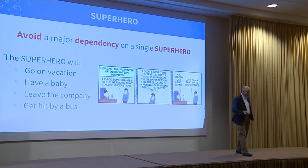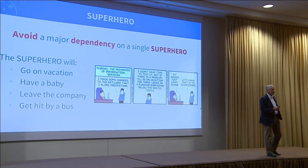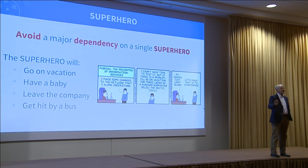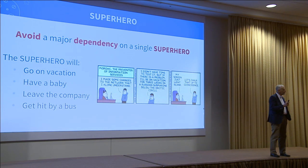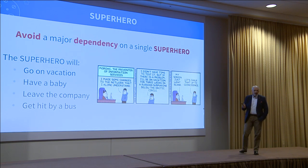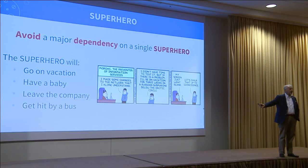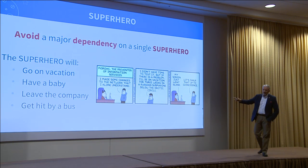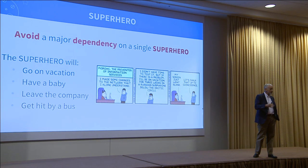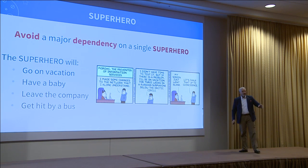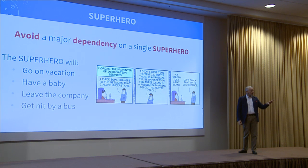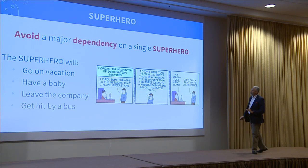Avoid having a superhero in the company or in your project. You know who the superhero is? It's the person who is very good at just about everything — oftentimes called an architect or a team lead. If you have the superhero, they're going to go on vacation, or have a baby, or leave the company because somebody offers them more money, or get hit by a bus. So you will be up a certain creek without a paddle. Avoid having a superhero. If there's somebody who is the legend in your team, learn why they're the legend and become their protégé.